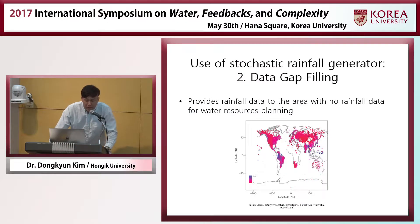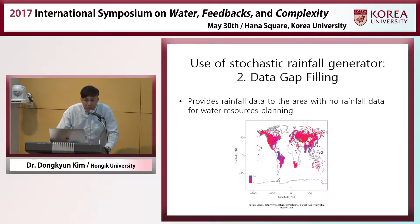The stochastic rainfall generator can also be used for data gap filling. This is a map of the world showing the location of rain gauges. But many areas, even though there are many rain gauges elsewhere, do not have the rainfall data they need — for example, to develop water resources plans. For these areas, this stochastic rainfall generator can provide the rainfall data.